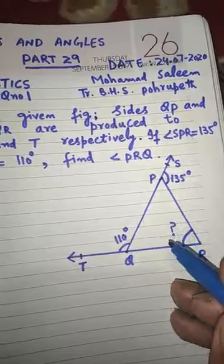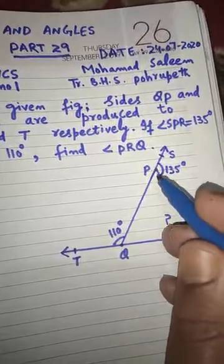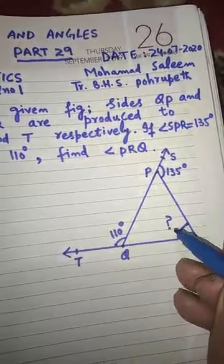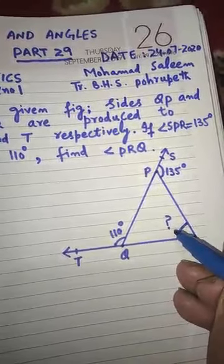The exterior angles are given to us. Now we need to find the interior angle QPR, since the exterior angle has a relationship with the interior angles.